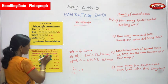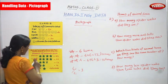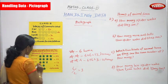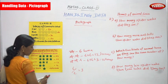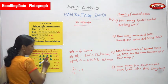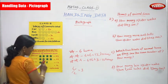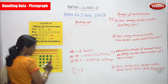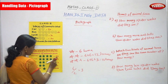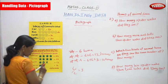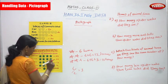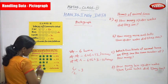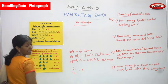This pictograph represents the homes of animals they saw. Bird's nest is twenty-four animal homes. Tree holes is twenty-four animal homes. Ant hills is fifteen animal homes — two and a half stars: six plus six is twelve, plus three is fifteen. Spider webs is twelve animal homes — only two stars, six plus six equals twelve.